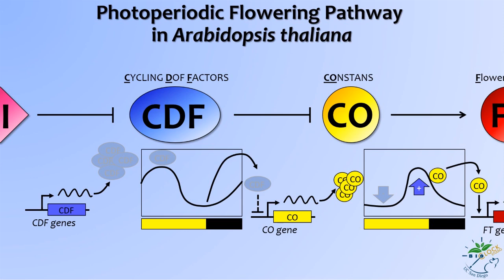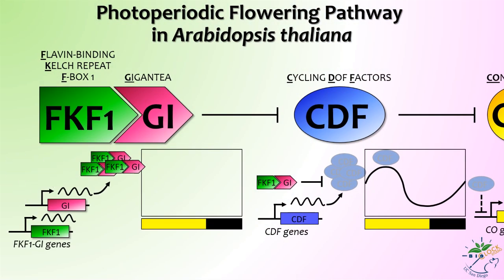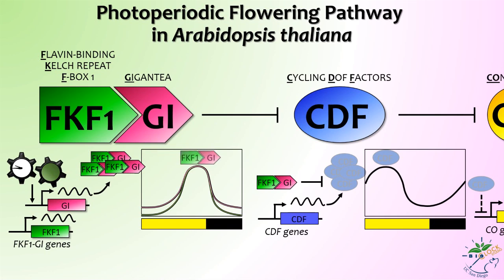Let's go backward in this pathway one more time. The quantity of CDF protein is regulated by a complex of two proteins: FKF1 and GI. FKF1 and GI are directly regulated by the clock, which confers a daily oscillation of their protein quantities. At the end of the day, FKF1 and GI form a complex that degrades CDF proteins, thereby facilitating the expression of CO.